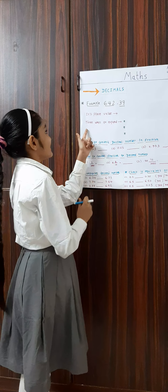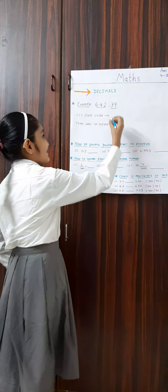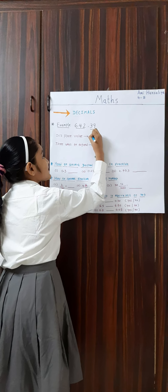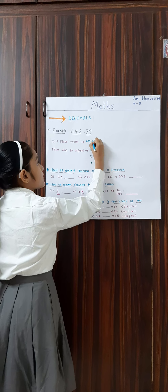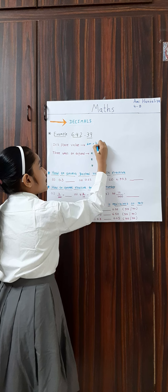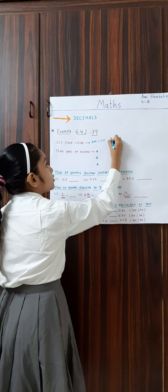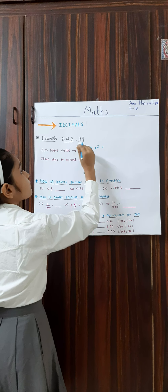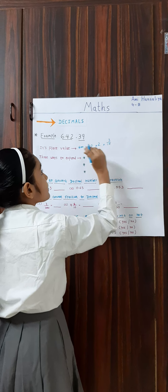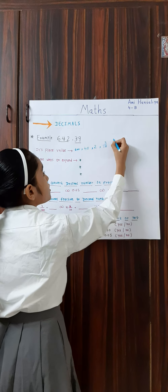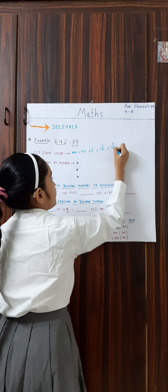So let's start with its place value. The place value of 6 is 600. The place value of 4 is 40. The place value of 2 is 2. The place value of 3 is 3 upon 10, and the place value of 9 is 9 upon 100.